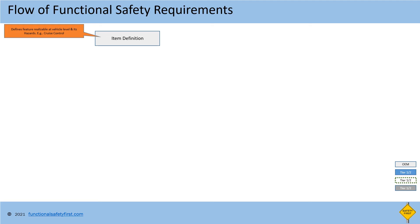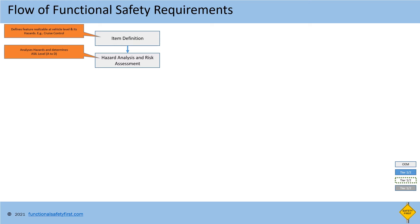After item definition, hazard analysis and risk assessment will be performed. In this, each hazard will be analyzed based on scaling of severity — which means how severe an impact the hazard creates to humans — occurrence, which is the probability of failure occurrence based on external environment and operation, and controllability, which is how easy or difficult it is for the driver to control in case of failure. ISO 26262 provides a table to compute the ASIL level for each hazard based on these three parameters.